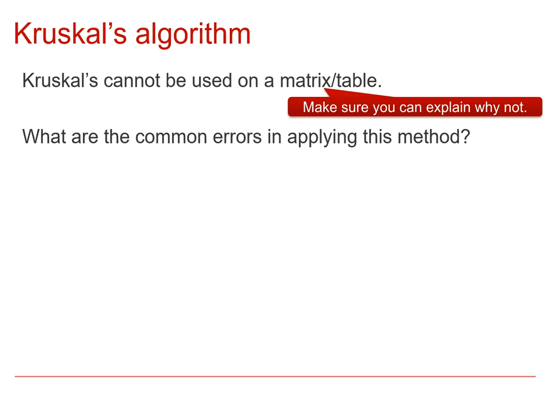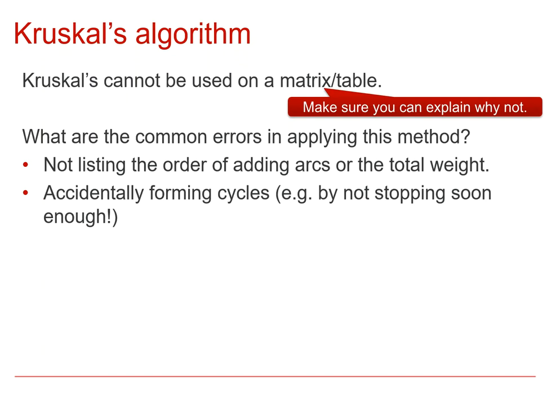Let's talk about some of the common errors that occur in this method, so you can watch out for them and not make them yourself. Forgetting to list the order. Again it's really important this because otherwise no one can tell that you've actually carried out the algorithm correctly. Accidentally forming cycles. So either just by not spotting when you've made one or feeling that you've got to keep going even though you've connected everything.